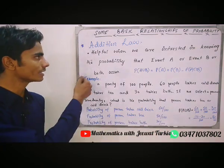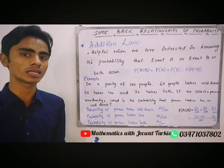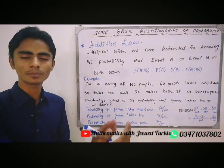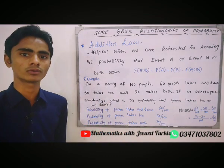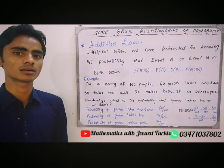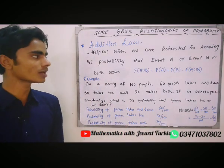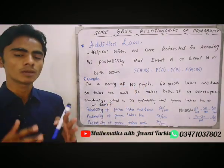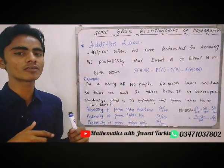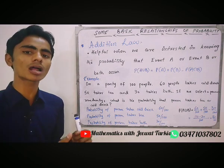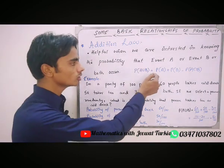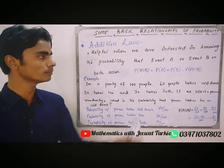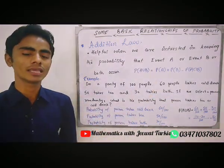So simply we introduce the addition law, because we need the probability of event A or event B — that is union. The addition law states: probability of A union B — the probability that event A may occur, or event B may occur, or both occur — is equal to probability of event A plus probability of event B minus probability of A intersection B.